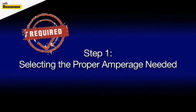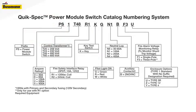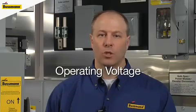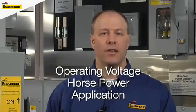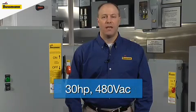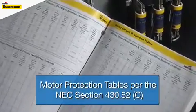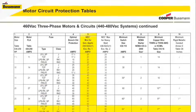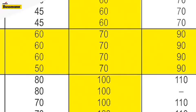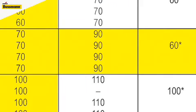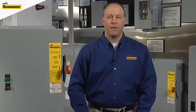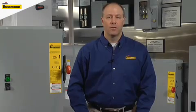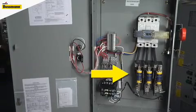The first step in a nine-step process for building a power module switch part number is to determine the switch amperage needed. For this, you will need the operating voltage, horsepower rating, and application the elevator is designed to operate. For our example, we will use a motor with a 30 horsepower rating at 480 volts AC. As we look at the NEC section for 30 horsepower, we can see the proper sizing for a general duty elevator motor would be 70 amps. If the elevator is a freight elevator, it might be better to size it accordingly with 90 amp fuses. Cooper Bussmann offers Class J time delay fuses to fit this application. The 70 amp through 100 amp fuses all fit into the 100 amp power module switch.